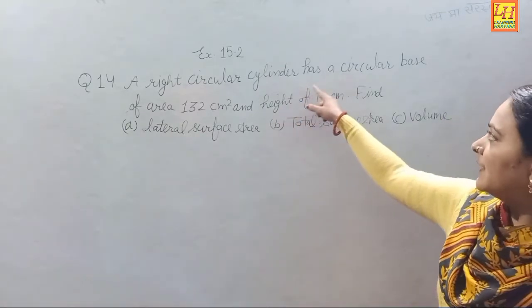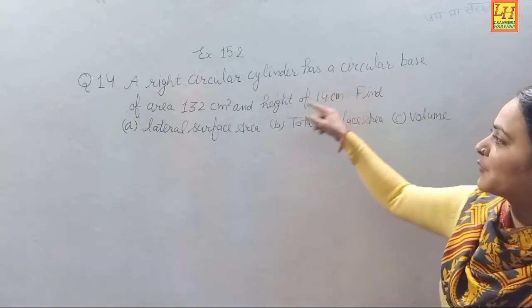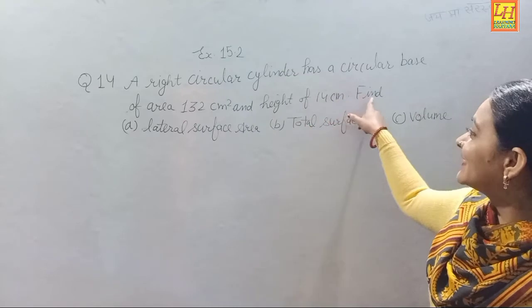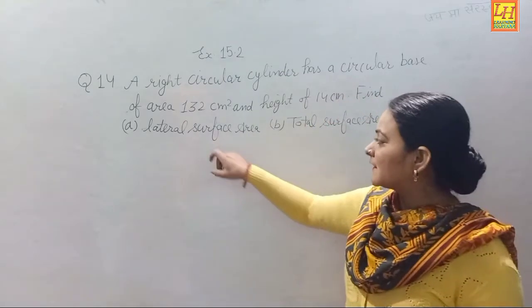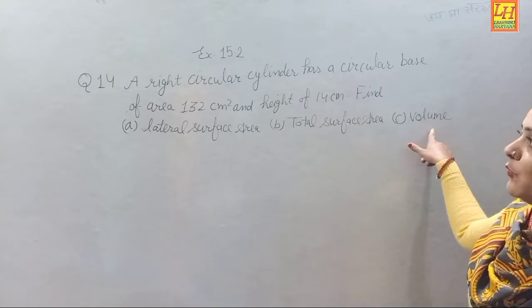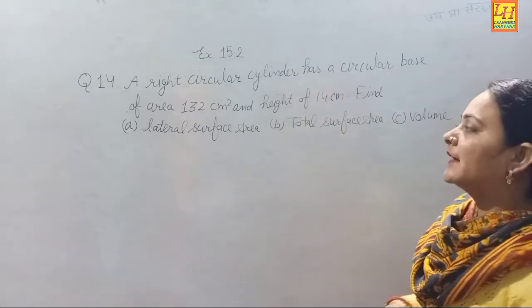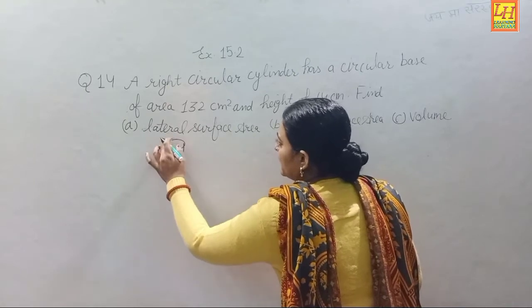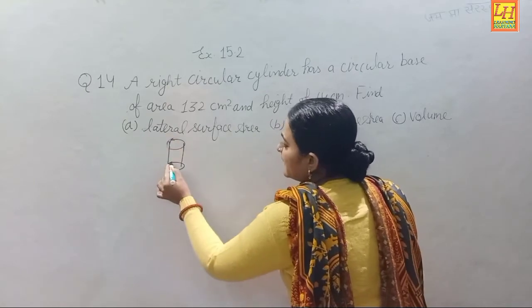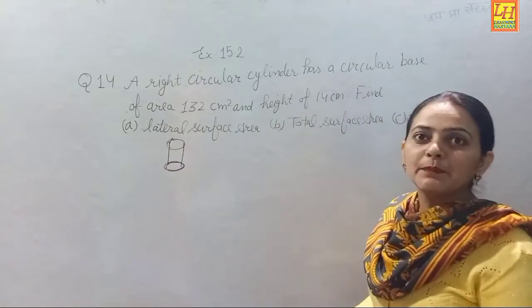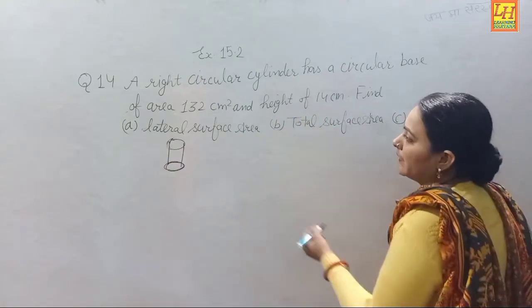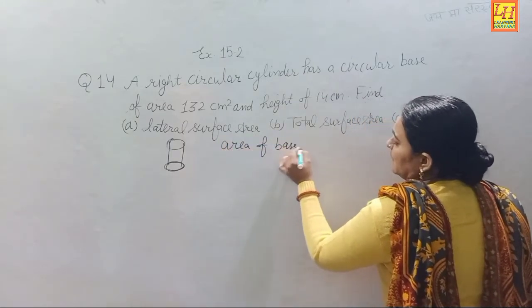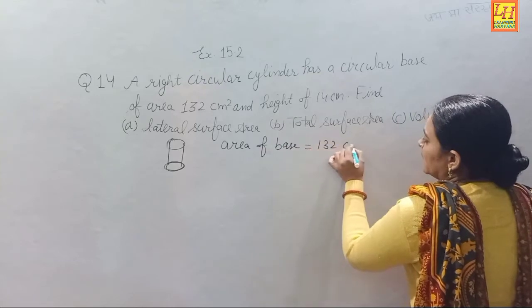Now Question Number 14: A right circular cylinder has a circular base of area 132 square centimeters and height of 14 centimeters. Find (a) lateral surface area, (b) total surface area, and (c) volume. The cylinder has a circular base, and the base area is given as 132 square centimeters.